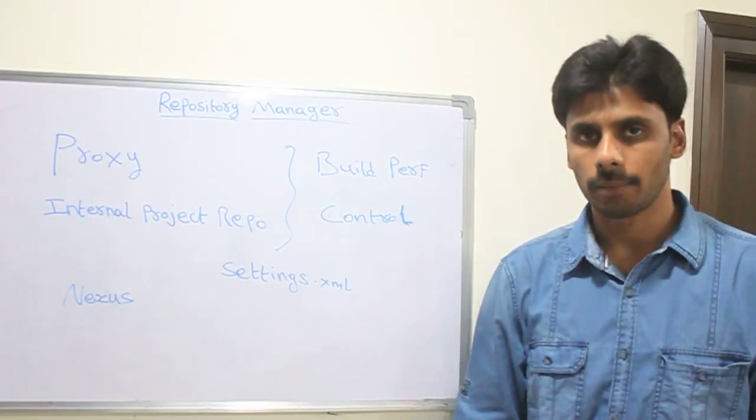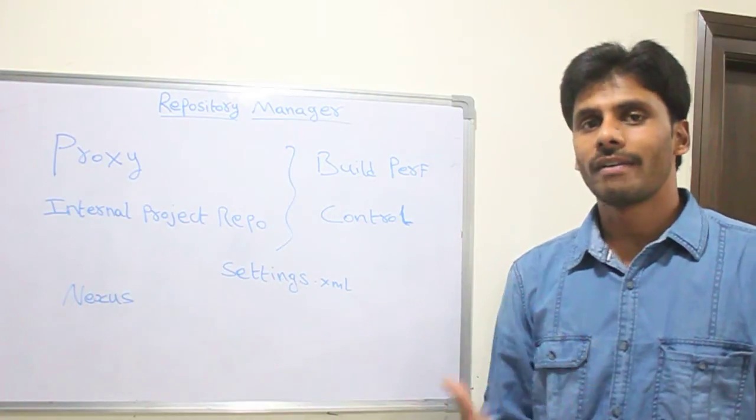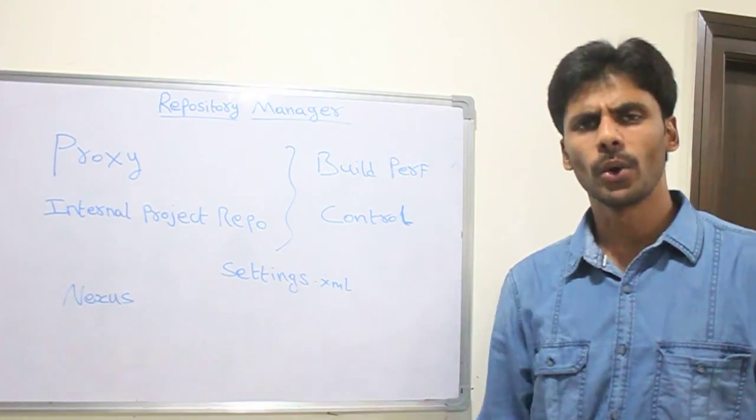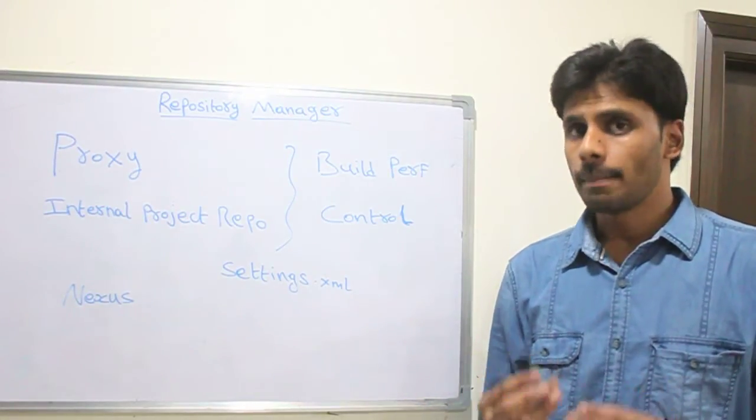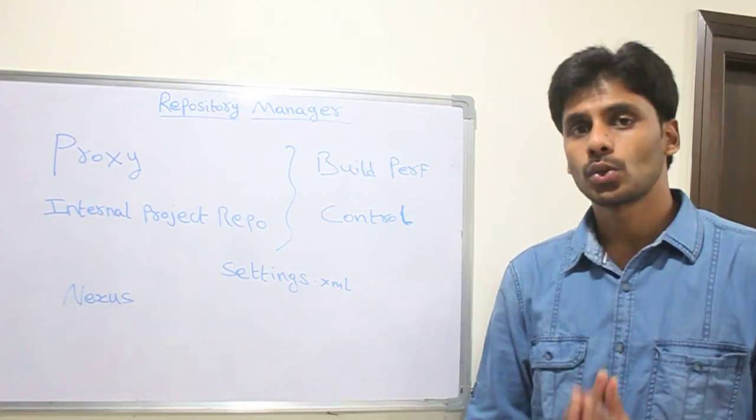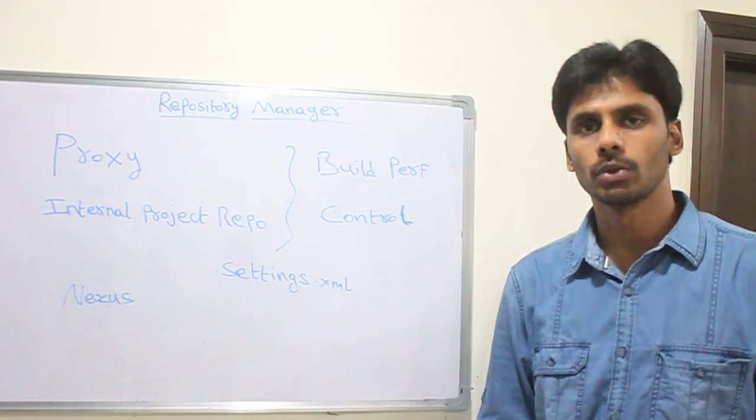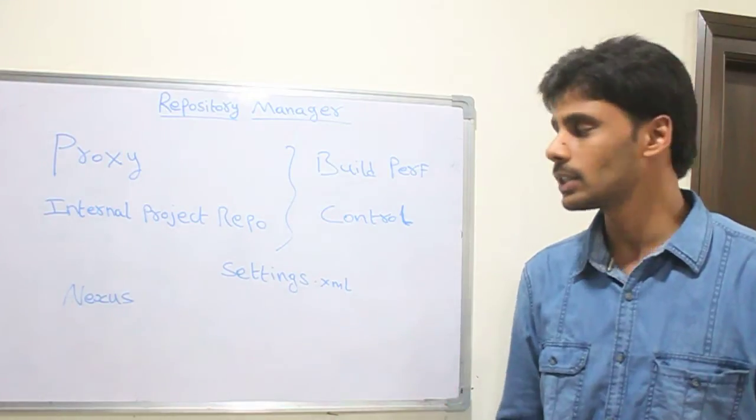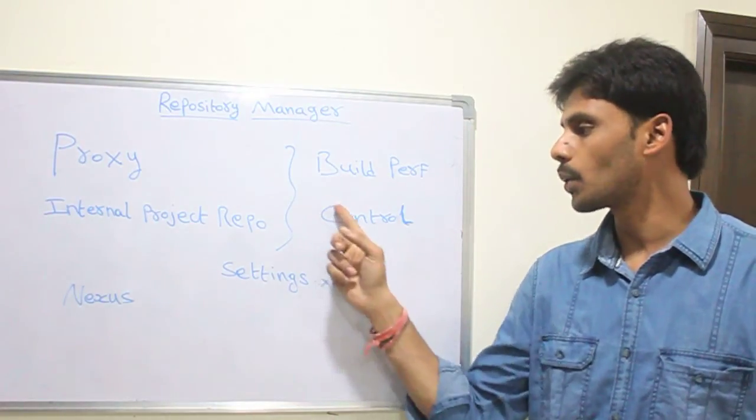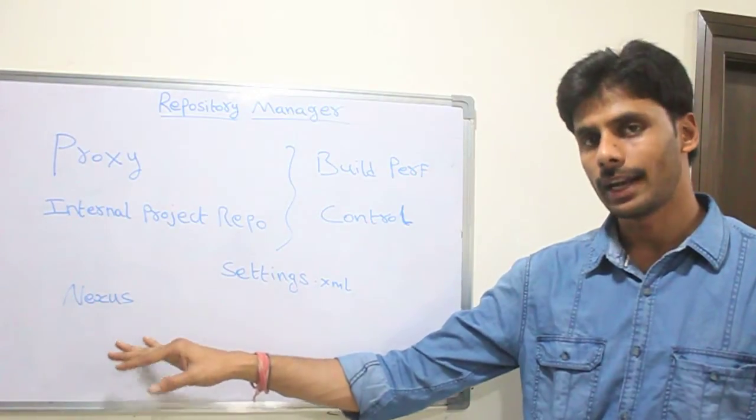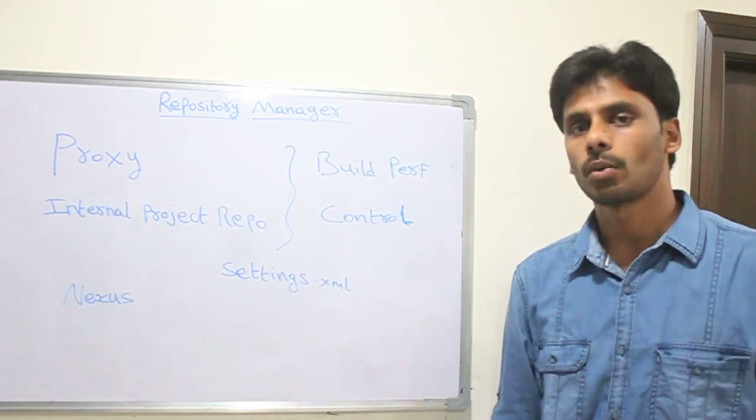And from that point in time, everything will be pulled from that Nexus repository. So if you have a team of architects who are going to decide what third-party libraries can be downloaded—for example, let's say your organization only allows Apache-licensed jar files to be downloaded and used in projects, or GNU license—then you can have that control to configure and make sure that only those jars are available in Nexus.